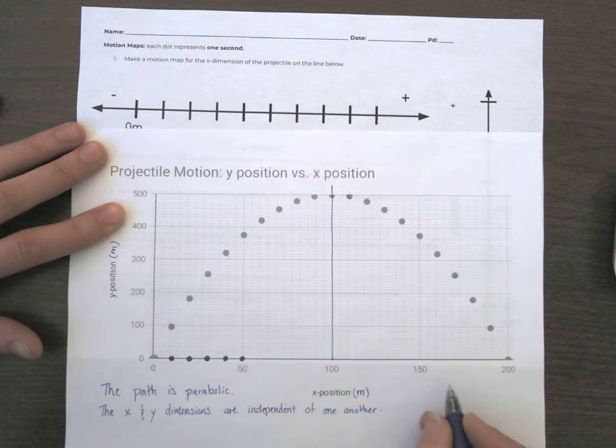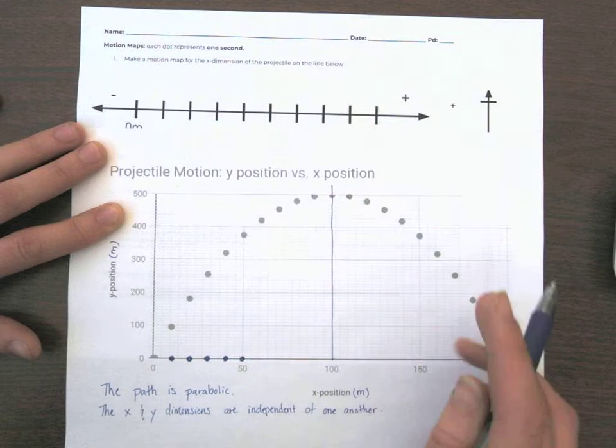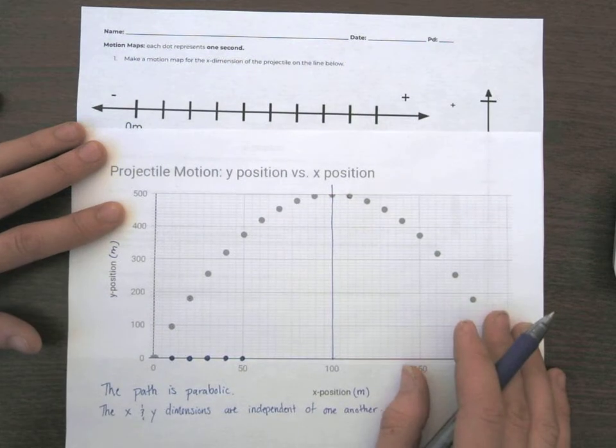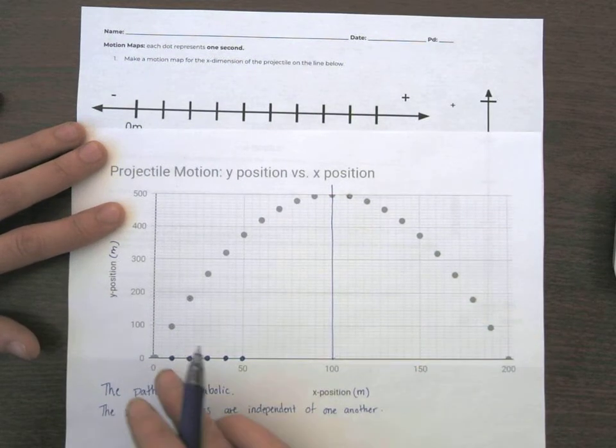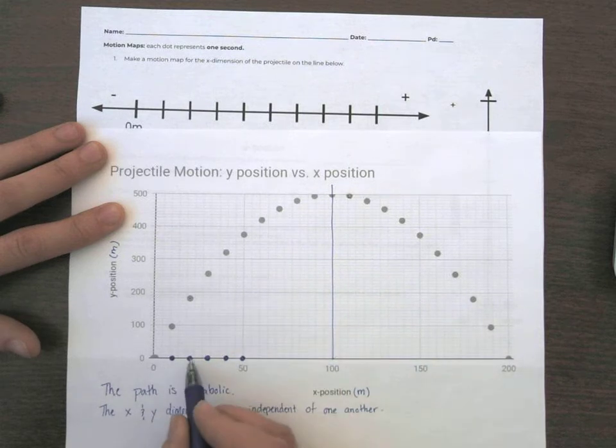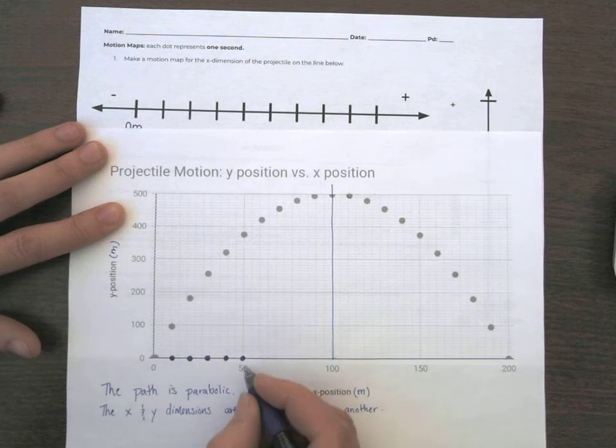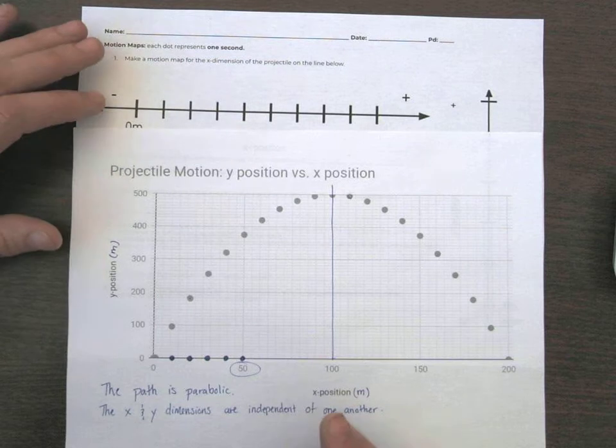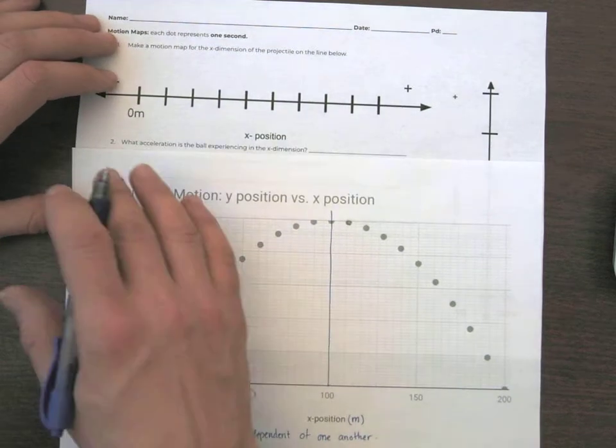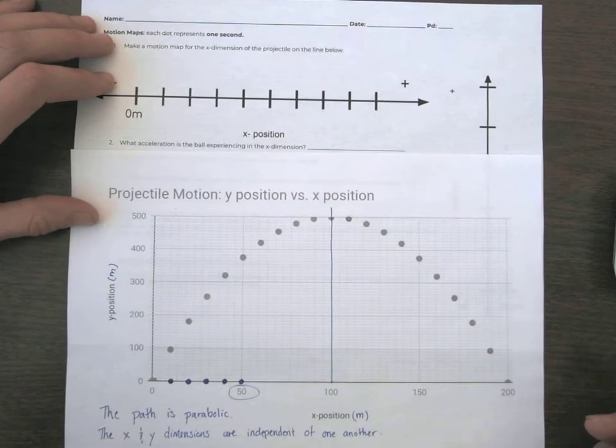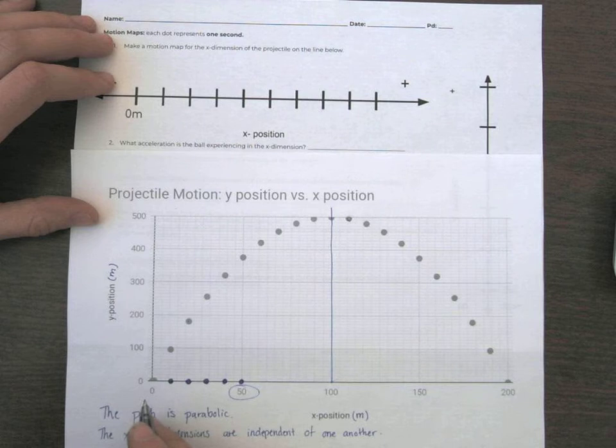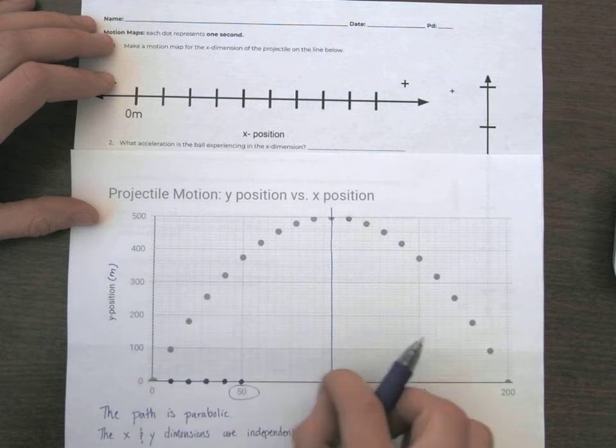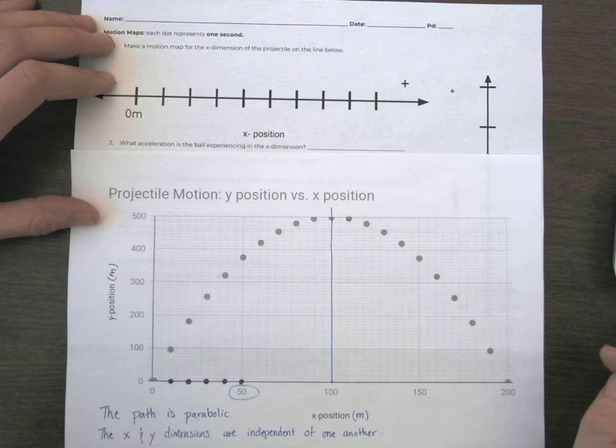That this becomes kind of our motion map for the X axis. It's just a line. So we can kind of say that, remember, each dot here represents one second. So it took one, two, three, four, five meters to get out to 50. So I'm not going to go ahead and copy all this. But remember, you can make a motion map by putting dots. You're basically copying whatever is going to be on this X axis back up onto this line here.